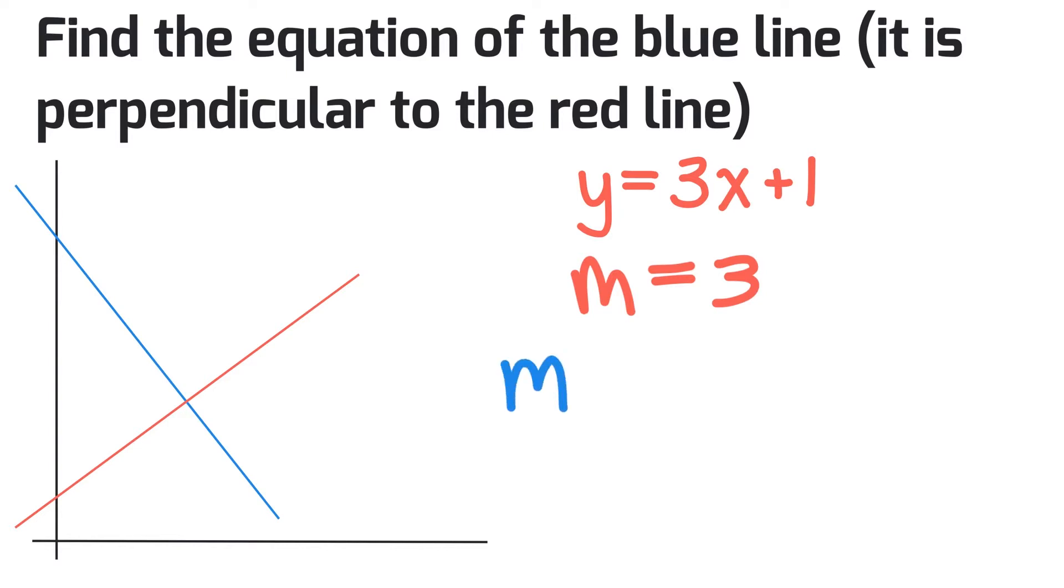Let's look at the slope of the perpendicular blue line. m⊥ equals the negative reciprocal, or -1 divided by the slope of the red line, which is 3. So the slope of our perpendicular line is -1/3.